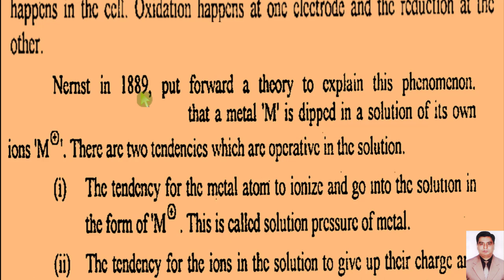According to Nernst, when a metal M is dipped in a solution of its own ions, it is conditioned that when a metal is immersed in a solution, there should be ions of the same metal. For example, if you are dipping a zinc rod in solution, the solution must contain zinc ions. Similarly, if you are dipping copper metal, the solution must contain copper ions. If you are dipping iron metal, the solution must contain ferrous or ferric ions.